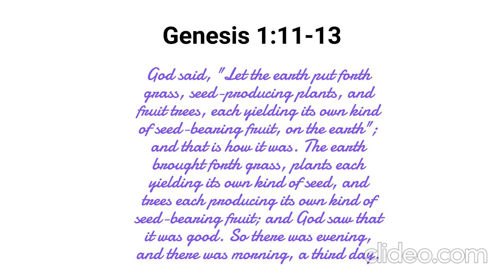God said, 'Let the earth put forth grass, seed-producing plants, and fruit trees, each yielding its own kind of seed-bearing fruit on the earth,' and that is how it was. The earth brought forth grass, plants each yielding its own kind of seed, and trees each producing its own kind of seed-bearing fruit, and God saw that it was good. So there was evening, and there was morning, a third day. In this passage, God speaks again and causes plants and trees that do not require cultivation to grow. Throughout God's word, the number three is associated with the earthly display of God's will and we see that here. God not only created plants and trees but also had them produce seeds so that they could continue to provide for the needs of the animals and people that will be created. In this way, we see that it has always been God's will to sustain His creation.